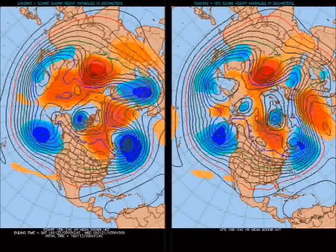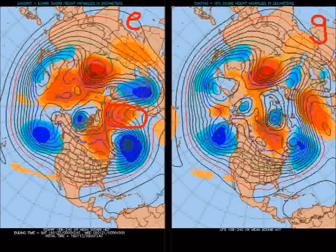Let's have a look a little bit further ahead. This is the day 7 to day 10 means of the 500 millibar flow from two models: the European here on the left and the GFS on the right. This is the time ending Saturday 23rd of January, the three days leading up to that. The two models are in somewhat agreement yet disagreement — they've both got a ridge of higher than normal heights in the vicinity of the British Isles, but exactly where they position it is quite different.